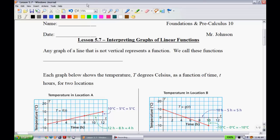Alright, lesson 5.7: interpreting graphs of linear functions. This is the last lesson of Unit 5 on functions and relations. Specifically, we're going to look at different graphs and how to pull out information from them. Any graph of a line that is not vertical represents a function. We call these functions linear.